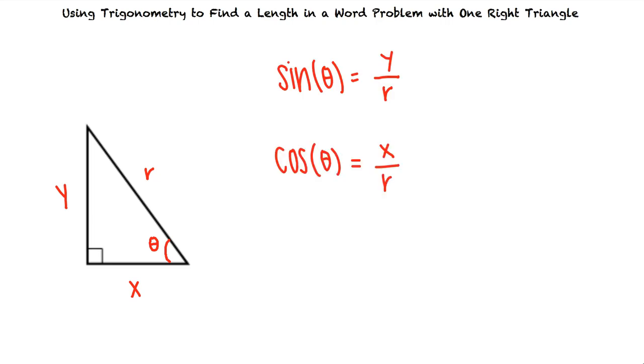Say we have a right triangle with sides x, y, and r. If we look at angle theta, we know that sine of theta equals y over r, cosine of theta equals x over r, and tangent theta equals y over x.